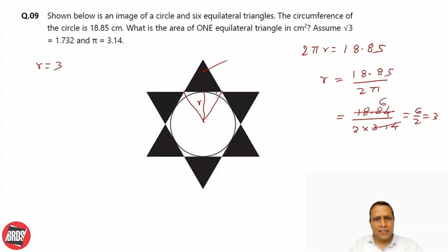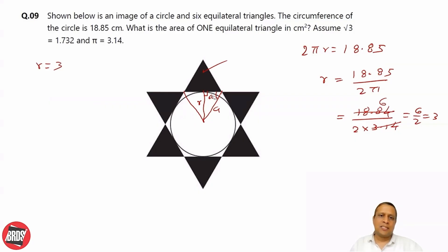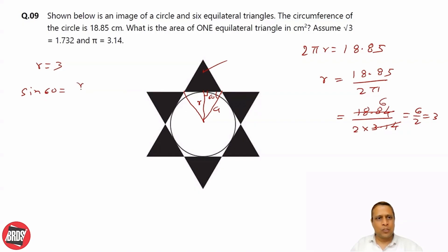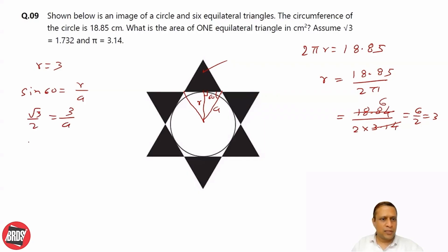Since this is an equilateral triangle, this angle is 60 degrees and this is a right angle. We already know r = 3. From here, we can find the side of the triangle — let's say it is A. You can use sine 60, which is r over A — opposite side over hypotenuse. The value of sine 60 is √3/2, and r is 3. So, A = 6 over √3.